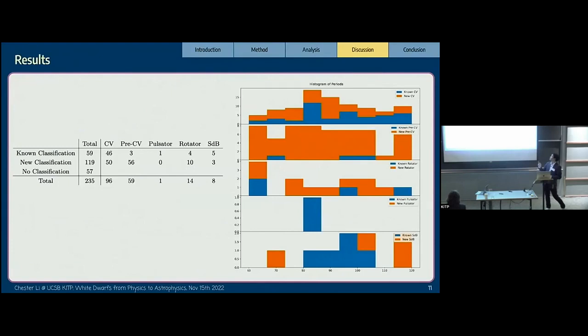Here are our results. We got 235 total periodic signals, and 59 of them were identified before by other people. About 119 of them, we actually assigned new classifications to them, like CVs, pre-CVs, rotators, pulsators, and STV stars. The remaining 57 are hard to determine their type based on photometry and the HR diagram, so we need to do follow-ups on those stars.